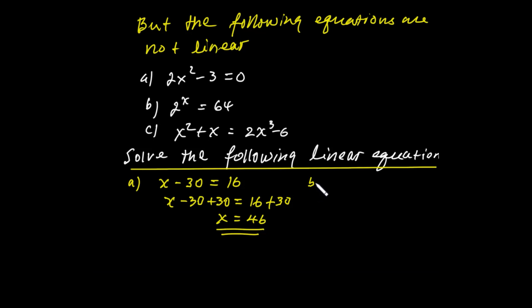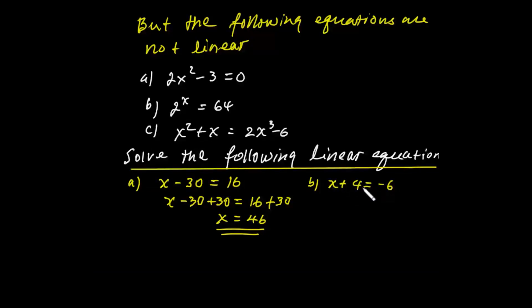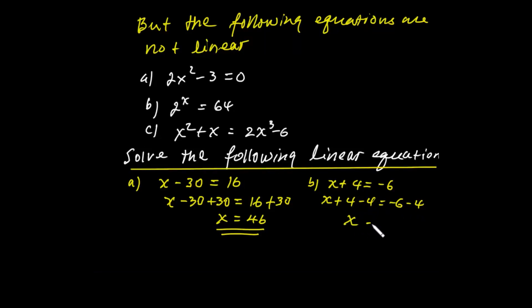Next: x plus 4 is equal to negative 6. We subtract 4 from both sides. So x plus 4 minus 4 is equal to negative 6 minus 4. Since 4 minus 4 is zero, x is equal to negative 10.